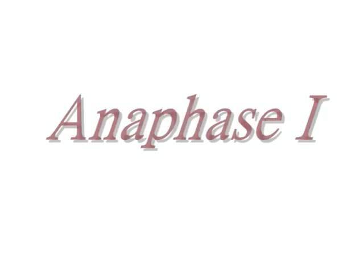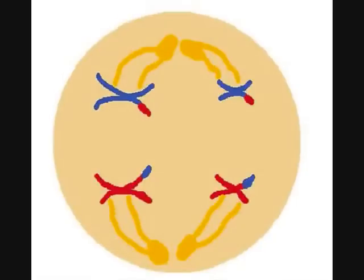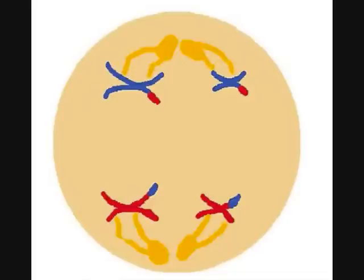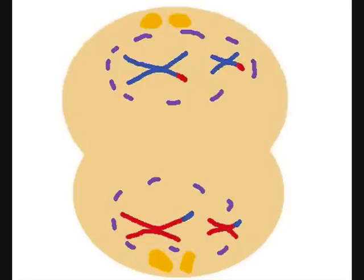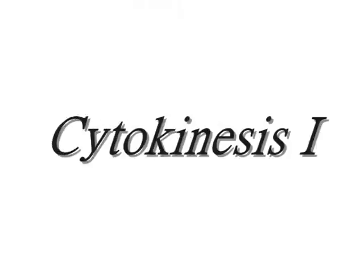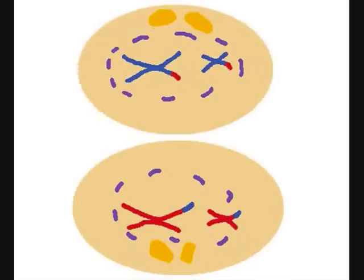Anaphase 1, the fourth step, begins with the spindle fiber contracting into the centrioles. The sister chromatids remain attached, but the tetrads split up. The cell begins to elongate, ready to be split. The chromosomes are now at the poles of the cell. The cell continues to elongate and is almost ready to be divided. Nuclei and nuclear envelopes begin to appear around the chromosomes. The cell is split into two daughter cells. The daughter cells are haploid cells because the homologous pairs were split up during anaphase 1. The sister chromatids are still intact.